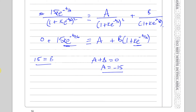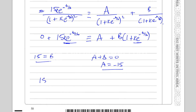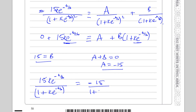So A is minus 15 and B is 15. We can now rewrite 15k e to the power of minus t over 16 over 1 plus k e to the power of minus t over 16 squared, as minus 15 over 1 plus k e to the power of minus t over 16 squared, plus 15 over 1 plus k e to the power of minus t over 16. We're getting closer to what we need.